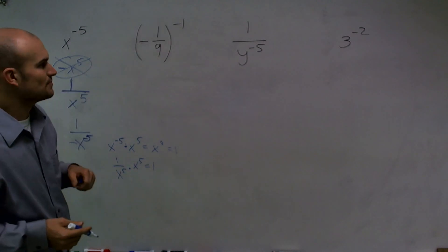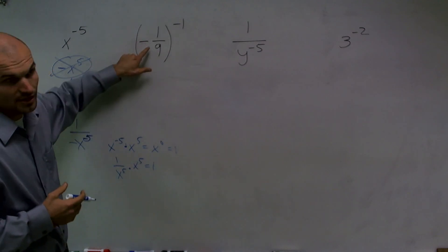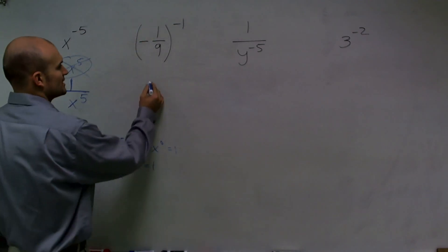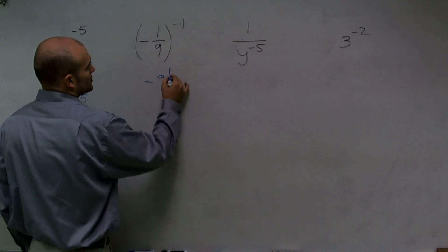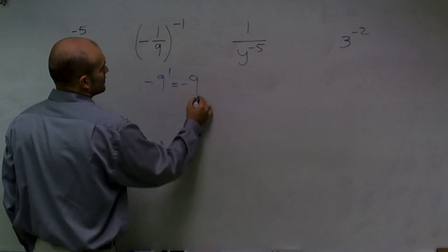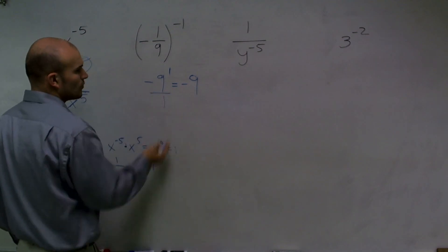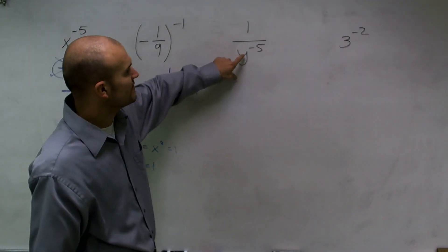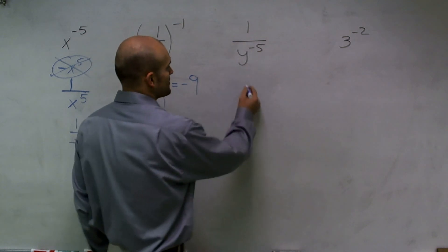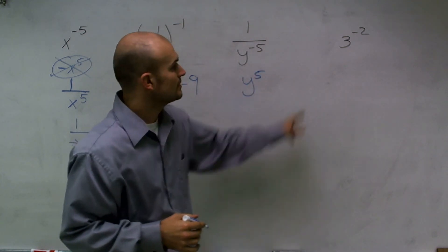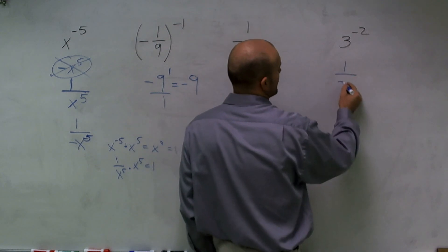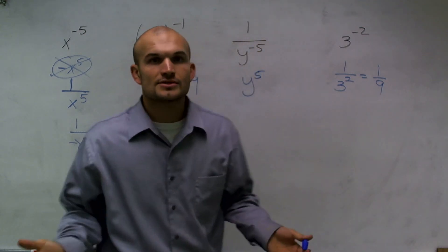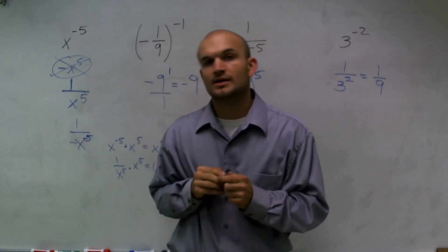For the final problems: this one has a negative exponent, but note the negative sign on the number stays negative. Taking the reciprocal gives negative 9. Here, I move the value from the denominator up top, giving y to the positive 5th power. And this one I rewrite as 1 over 3 squared, which equals 1 over 9. That's how you use the negative property of exponents to solve these problems. Thank you, everybody.